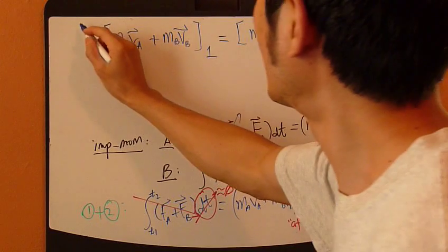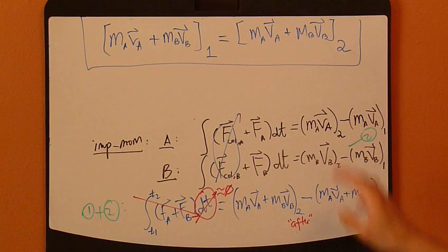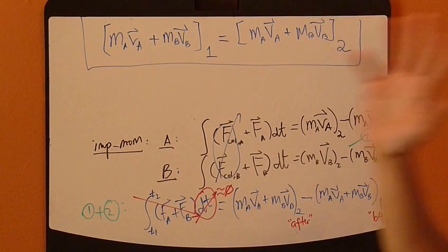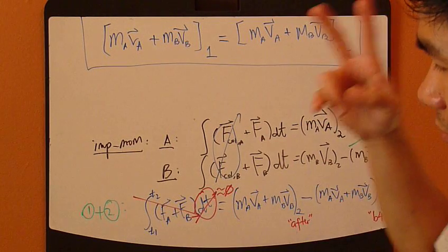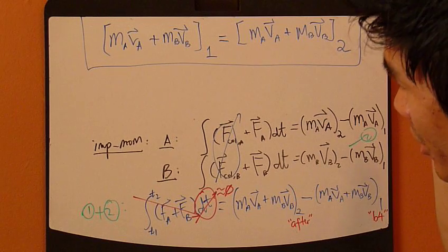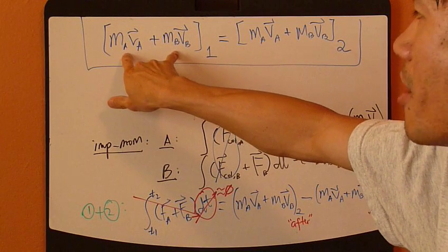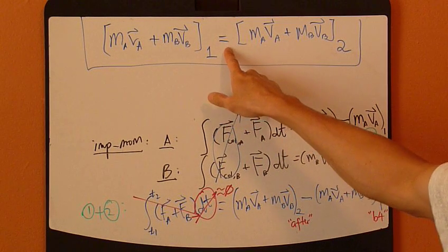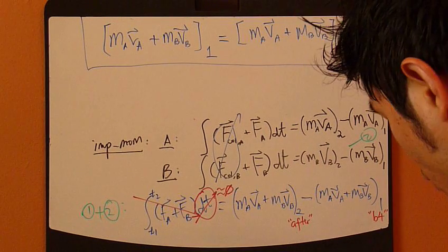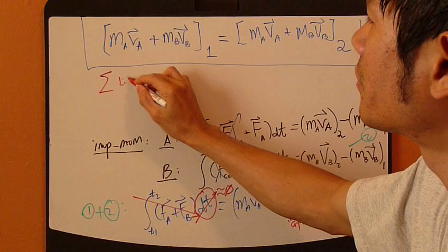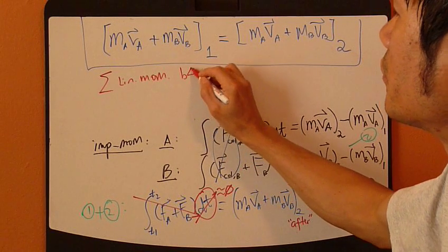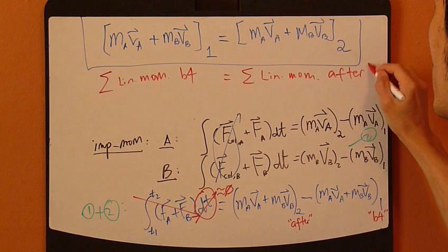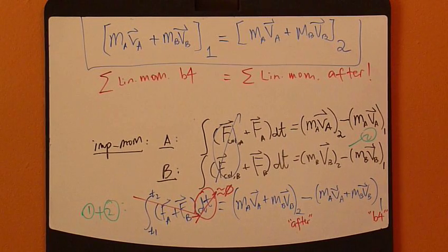This is your impact equation, applicable to your entire system, which could consist of two or more particles. You sum all the linear momentum together of all the particles before impact, and that equals exactly the sum of linear momentum after impact. That is what conservation of linear momentum during impact means. Now let's look at examples.